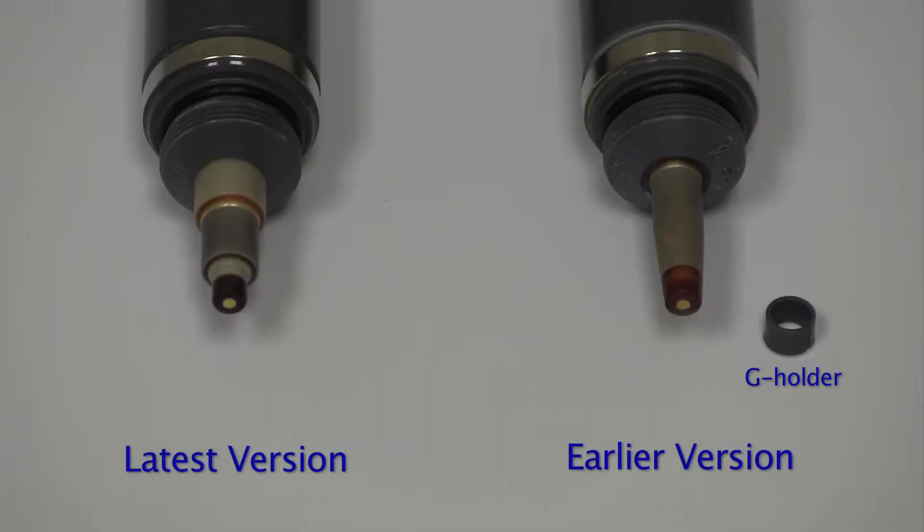For some earlier free chlorine probe models, an additional much smaller cap, referred to as a G-holder, was required and included in the kit.